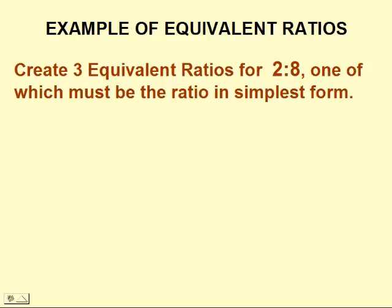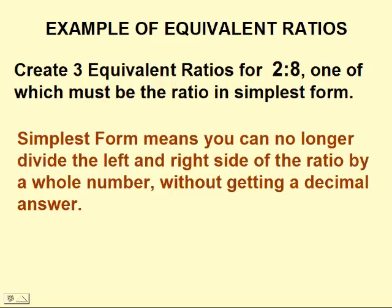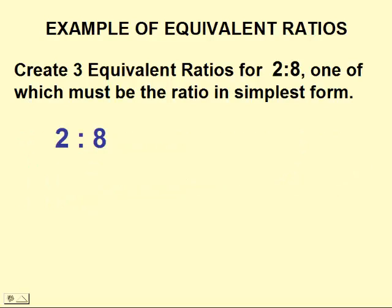Let's create 3 equivalent ratios for 2 to 8, one of which must be the ratio in simplest form. Simplest form means you can no longer divide the left and right side of the ratio by a whole number without getting a decimal answer. The same thing as reducing fractions to simplest form. So we'll start with 2 to 8.